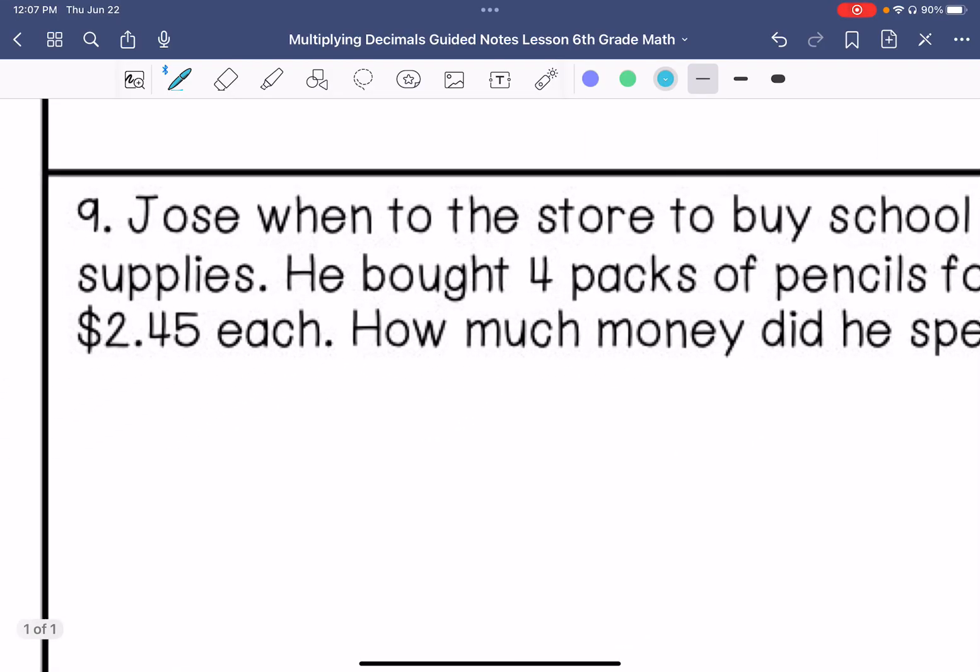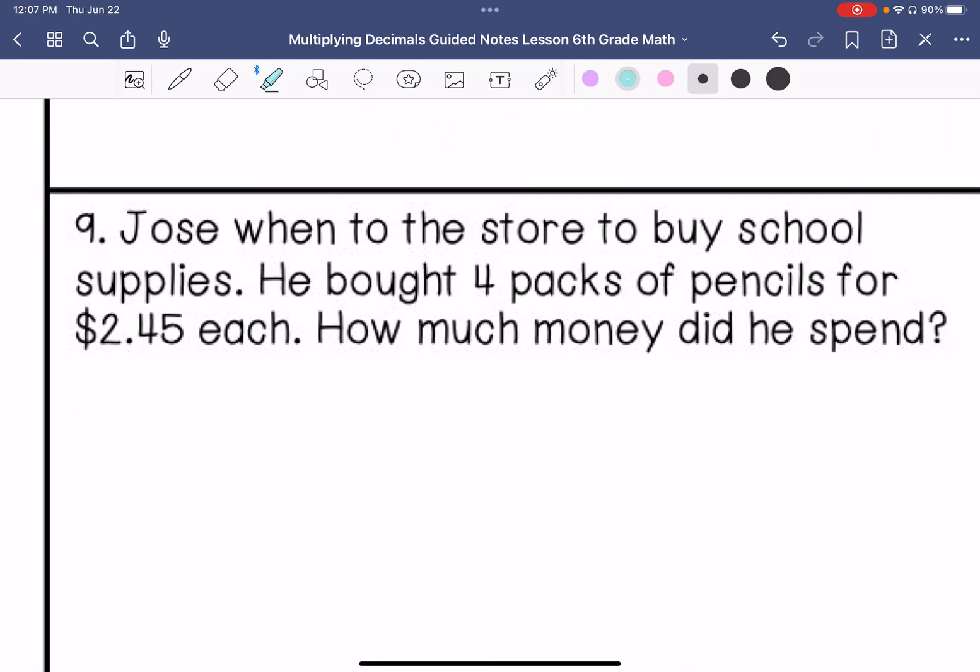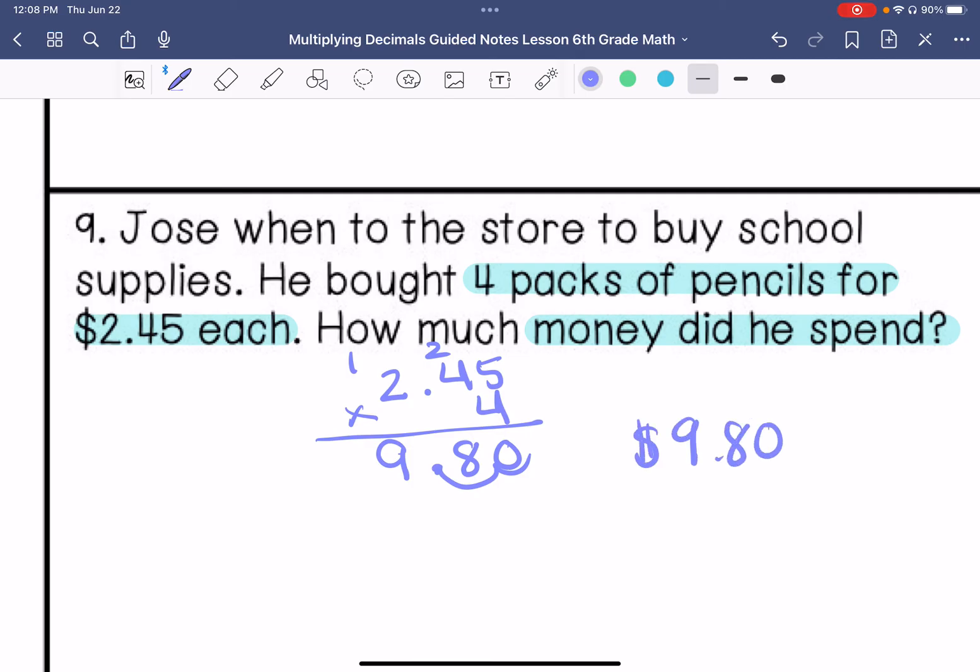Alright, here are our word problems. It says, Jose went to the store to buy school supplies. He bought 4 packs of pencils for $2.45 each. How much money did he spend? The each is what is our key word to multiply. So $2.45 times 4. 4 times 5 is 20. 4 times 4 is 16. Plus that 2 is 18. And then 4 times 2 is 8. Plus that 1 is 9. We have 2 behind the decimal point. So he spent a total of $9.80 on school supplies.